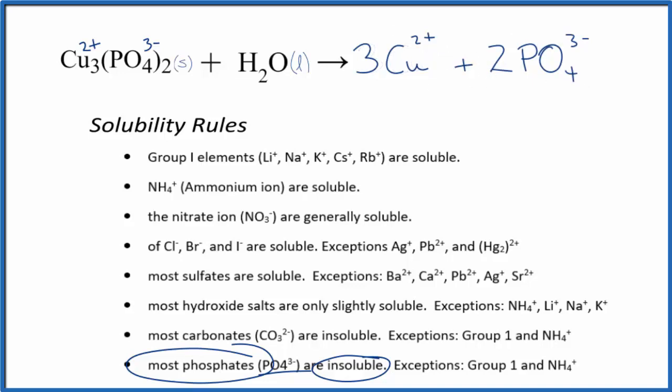Then we have 2 of our phosphate ions. Since these are dissolved in water, let's put AQ for aqueous. So this is the equation for the very small amount of the copper 2-phosphate that dissolves in water.